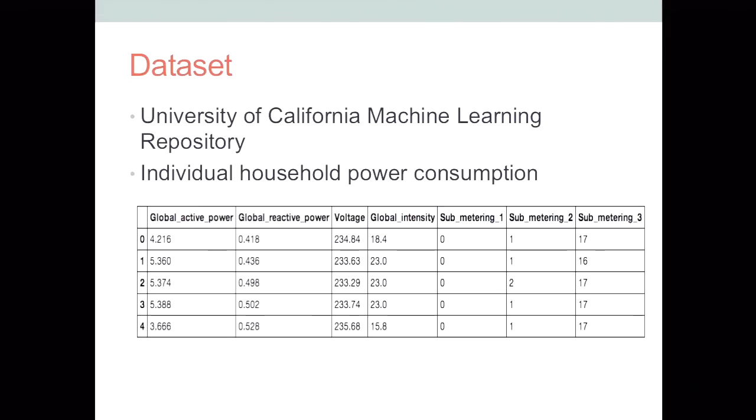But some of the different features in this data set: global active power, which is household global minute average active power in kilowatts. Global reactive power, which is household global minute average reactive power in kilowatts. Voltage, which is minute average voltage in volts. Global intensity, household global minute average current intensity. And then submetering, one is kitchen, two is laundry room, and three is water heater, air conditioner. And what these things really mean, I don't know because I don't know anything about power consumption.